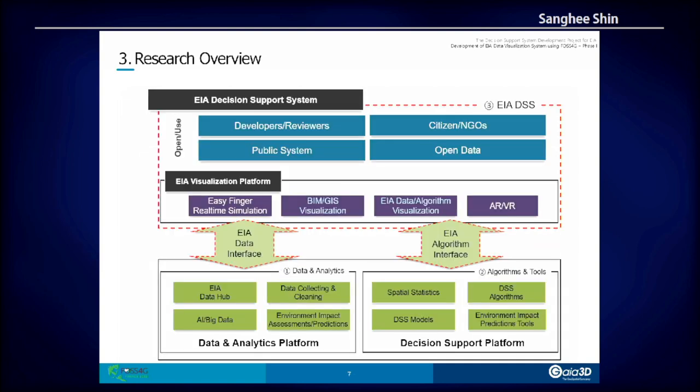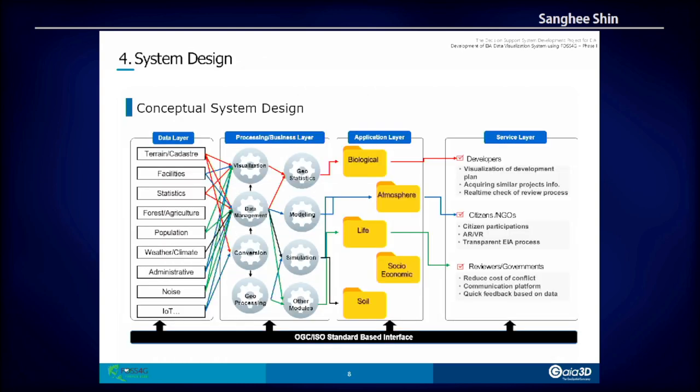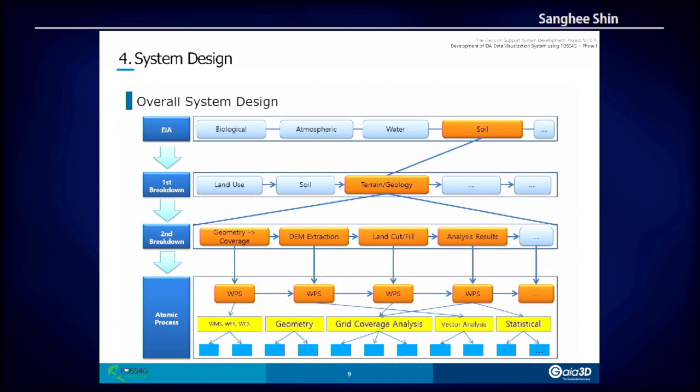This is the overall architecture of the whole research. This is a five-year span national research project, and this year is just the third year. This shows the conceptual system design of our system — a layer-based architecture consisting of a data layer, processing and business layer, application layer, and service layer.